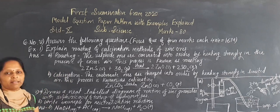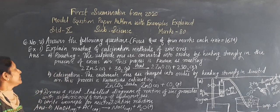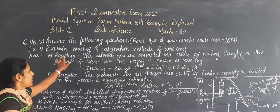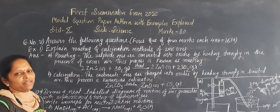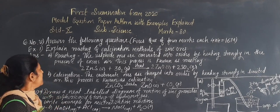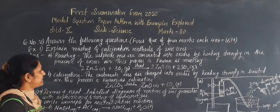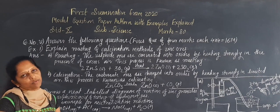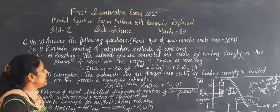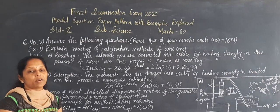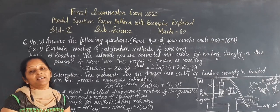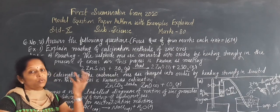So here, the roasting and calcination method — explain that for this question. First of all, what is roasting? When extraction of metals of the middle-activity series is needed, like zinc extraction, it is necessary to first convert the ore into the oxide form. Extraction from oxide is easier than from sulfides or carbonates. So first it is necessary to convert into the oxide.